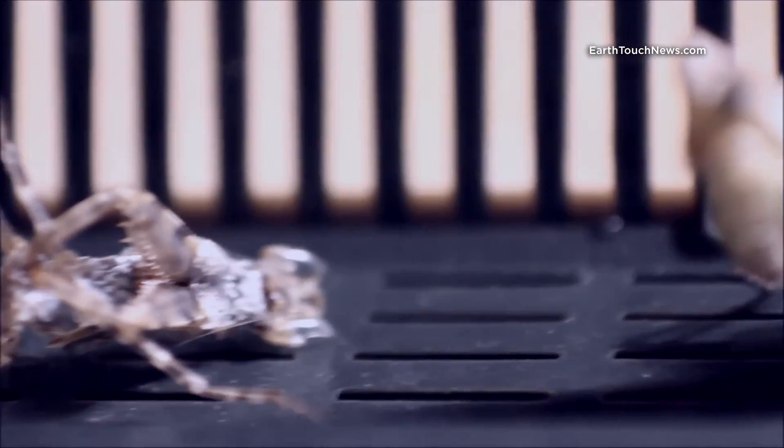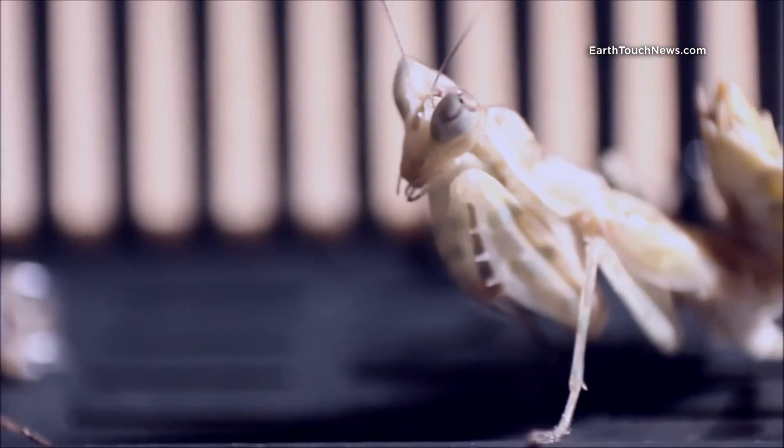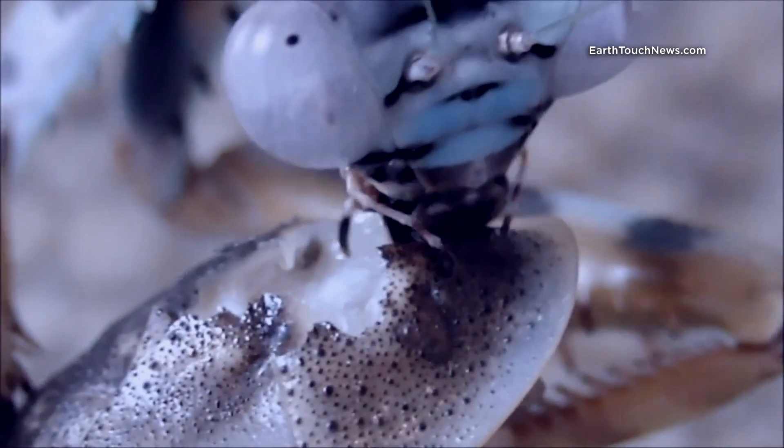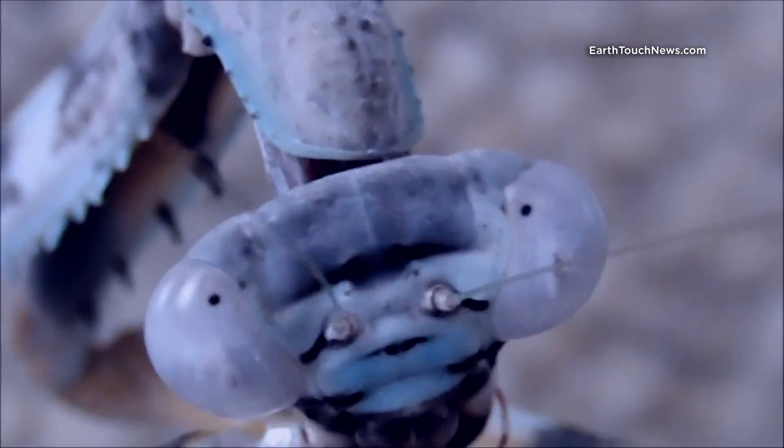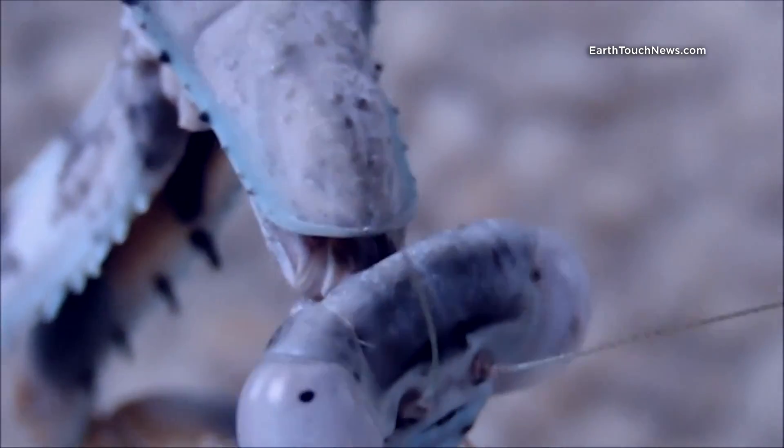Mantids molt up to ten times in their lives, each time emerging bigger and stronger, to ultimately become the killing machines that put them at the top of the insect food chain.